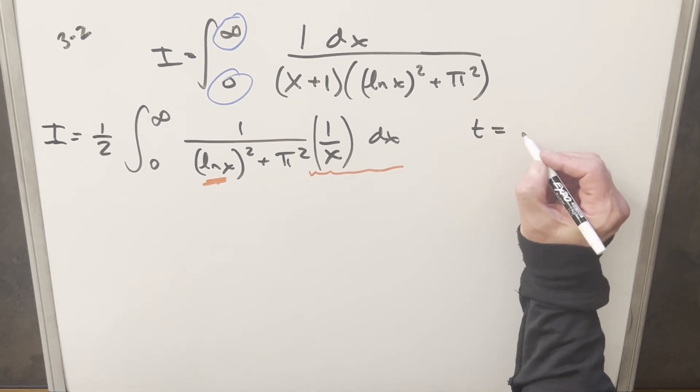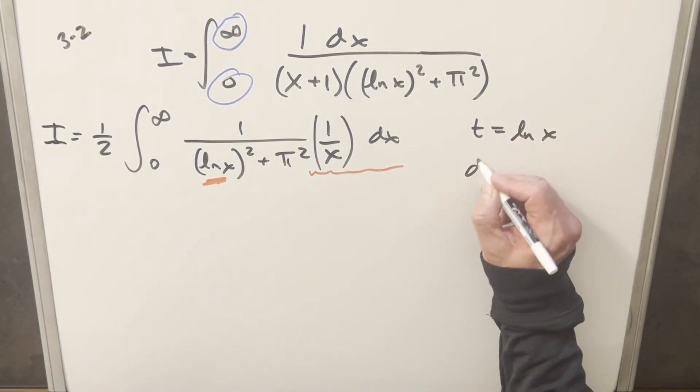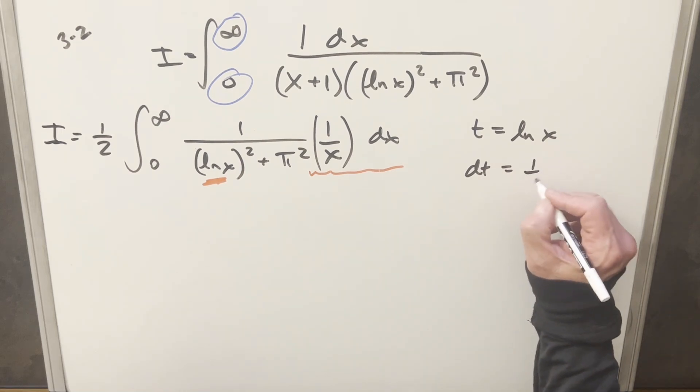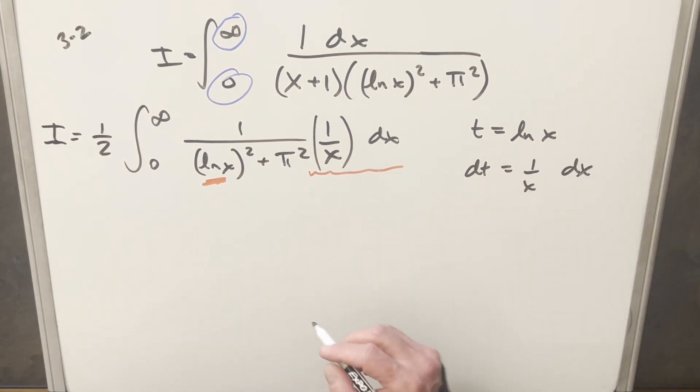So we'll do this substitution. I'll just use a different variable. Let's call it t. So I'll say t equal to ln x. Then dt is just going to be this stuff, 1 over x dx.